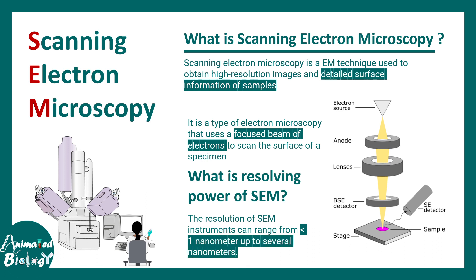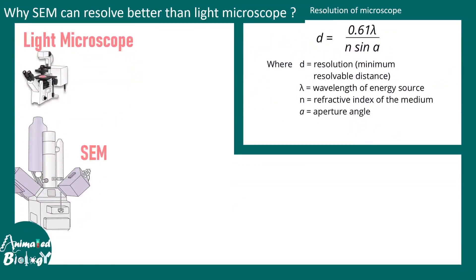The resolving power of SEM is quite high and it is in the range of less than a nanometer to several nanometers. Remember, the resolution limit of a light microscope is about 200 nanometers classically. So why does SEM have a better resolving power than a normal light microscope? That is something we have to understand.